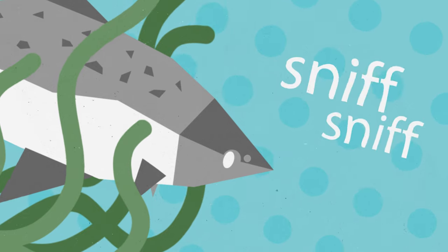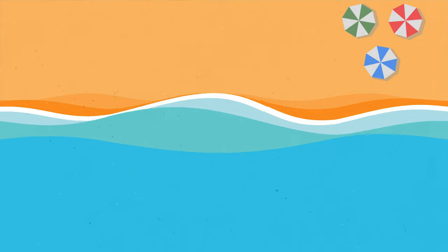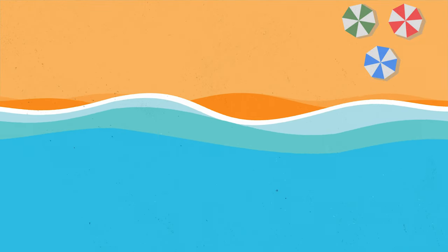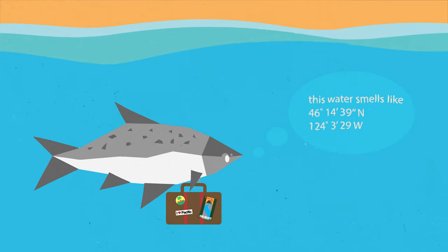That's right, salmon can smell, and not in a fishy way. Well, sort of. Compare the scent of a beach to a swamp. Water has an odor, one that helps fish recognize where they are.